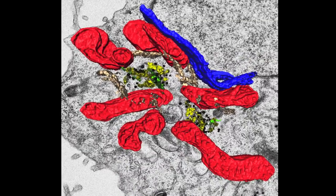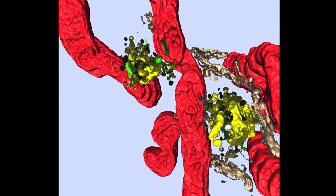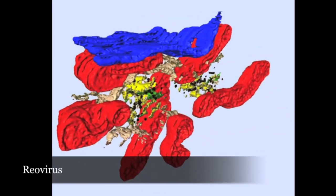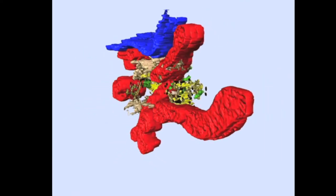Viral factories contain inter-organellar contacts not observed in non-infected cells. Their complex architecture is starting to be revealed with the help of 3D imaging.